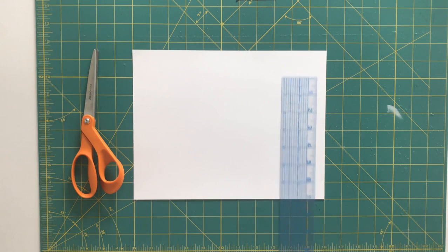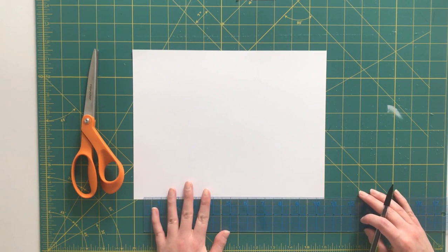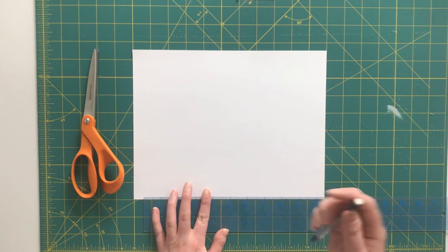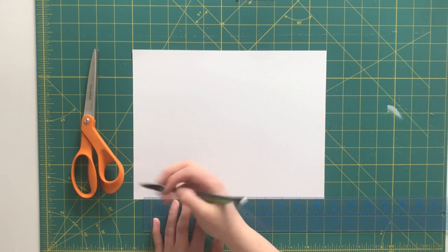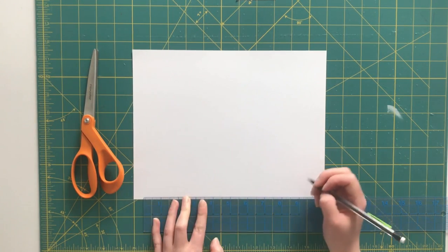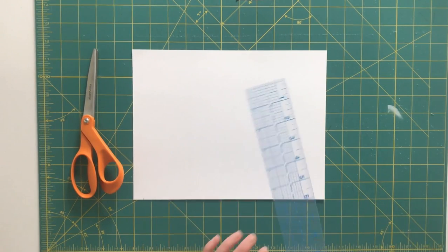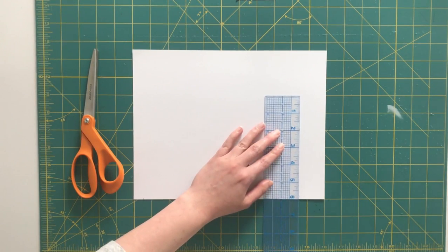Okay, to make my pattern I'm going to start by marking nine inches along the bottom of my paper. From that nine inches I'm going to measure up six.